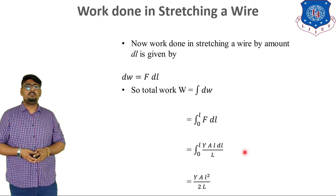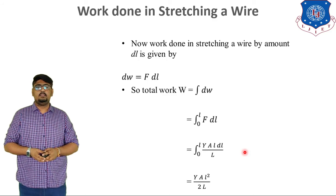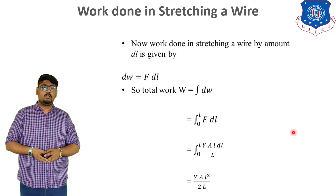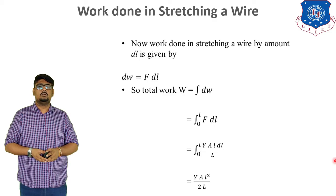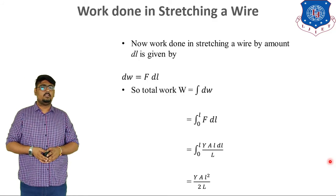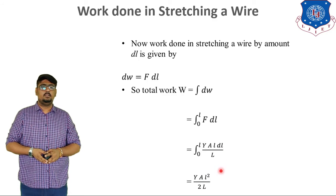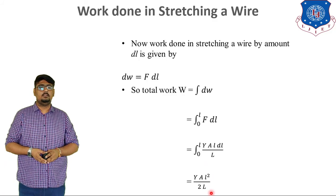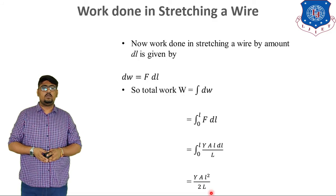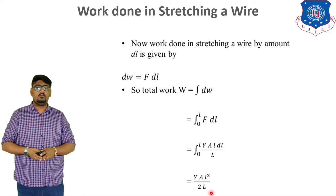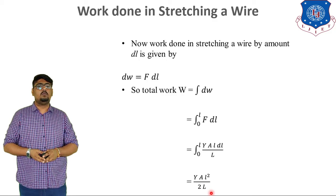So, now the work in stretching the wire by amount dl is given by dw is equal to F into dl. So, the total work can be derived by integrating over the entire length from 0 to l. So, total work W is equal to integration dw. Now integrating dw for the entire length from 0 to l, we get integration 0 to l of F dl. Now, placing the value of F is equal to YAl upon capital L, we get the equation integration 0 to l YAl dl upon capital L. So, on integrating, we get the equation of total work as YAl square upon 2L.